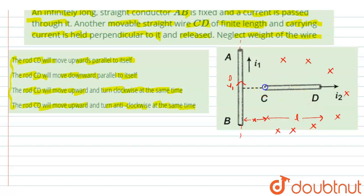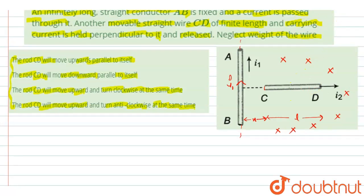This CD conductor, which is carrying a current, has been placed in an external magnetic field. Then there will be a force acting on this conductor CD. The direction of this force we can find by using Fleming's left-hand rule, and by applying it we find the force to be in the upward direction.